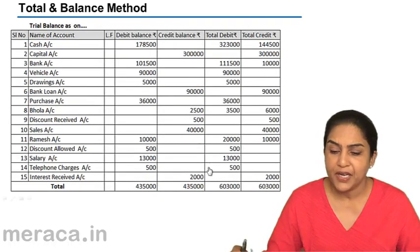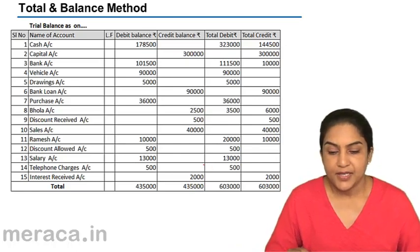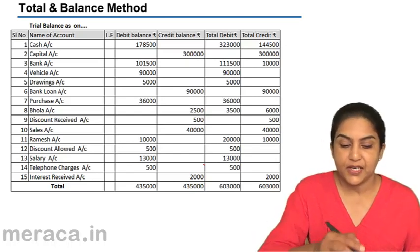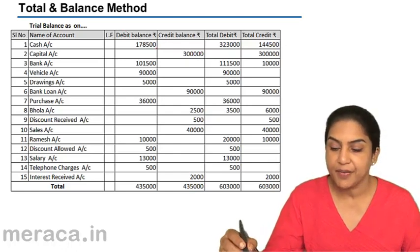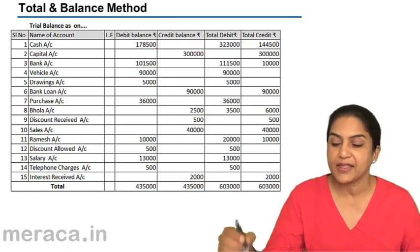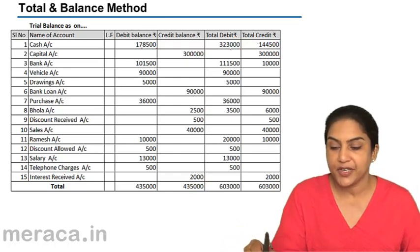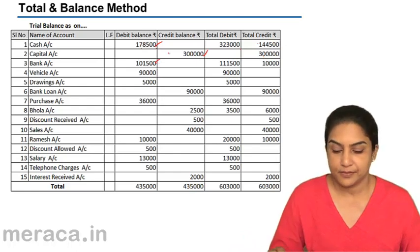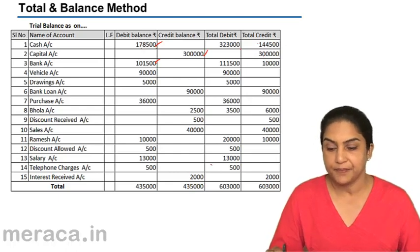Another is the combination method — total and balance method. Under this, you have extra columns: serial number, name of the account, ledger folio, debit balance and credit balance, and also total debit and total credit. The difference of total debit and total credit gives you the balance. If the debit side is more, it gives a debit balance; if the credit side is more, it gives a credit balance. This is the third method of preparing the trial balance.